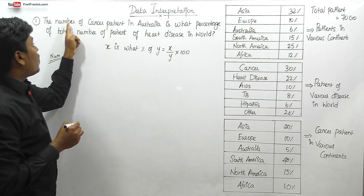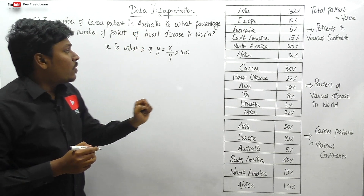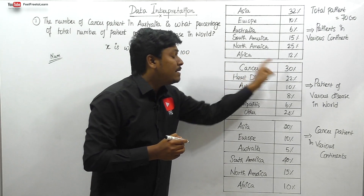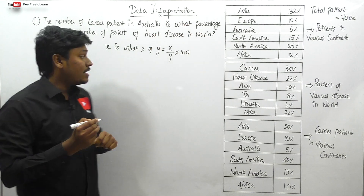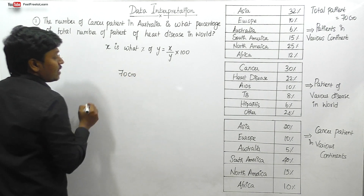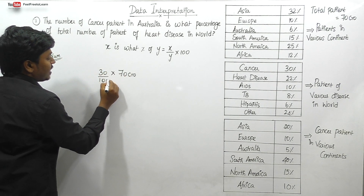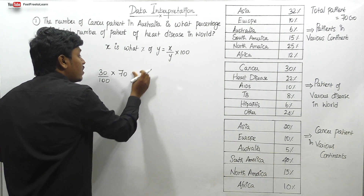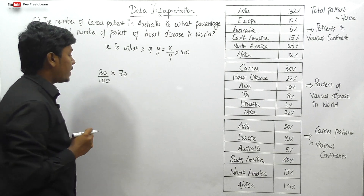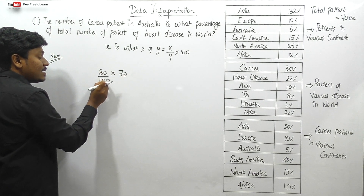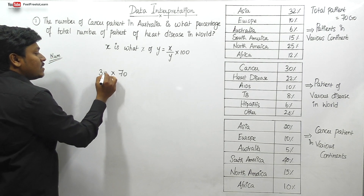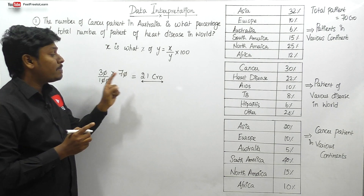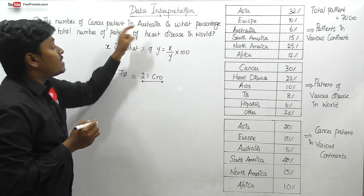First, let's find the numerator — total cancer patients in Australia. We know there are 70 crores total. Cancer patients are 30% of 70 crores: 70 × 30 / 100 = 21 crores. One crore has seven zeros. So total cancer patients across all continents is 21 crores. But we need only cancer patients in Australia.